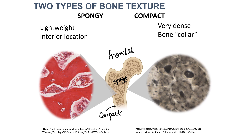Sometimes this can be called a bone collar, because the compact bone, much like the collar of a shirt, surrounds the entire bone and gives it structure and support to maintain its shape. Many of the flat bones in your body are composed of a structure called diploe.